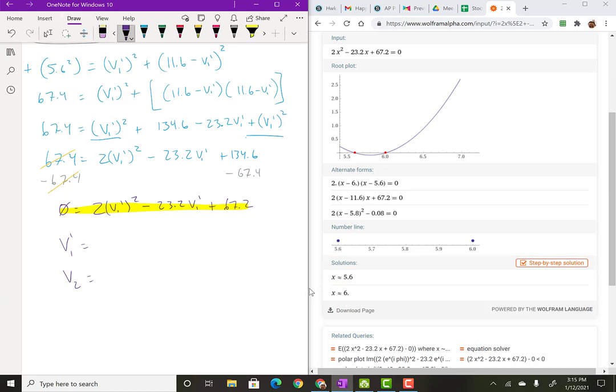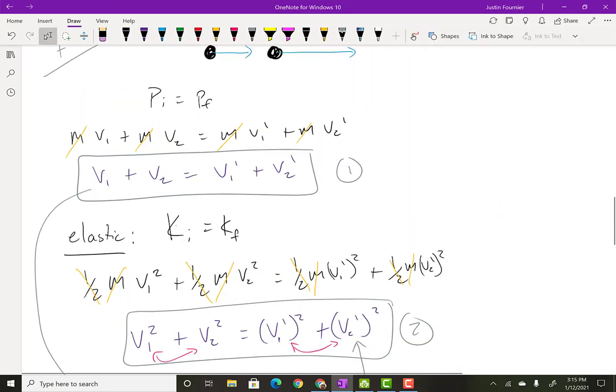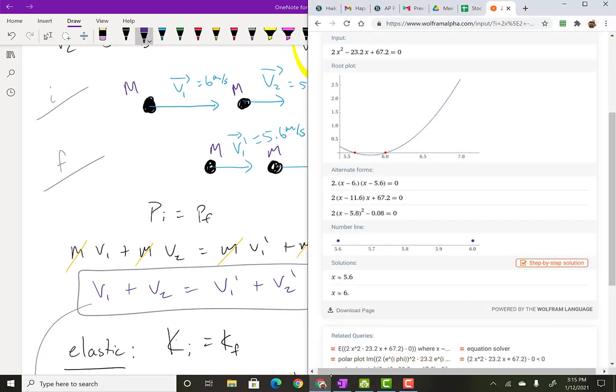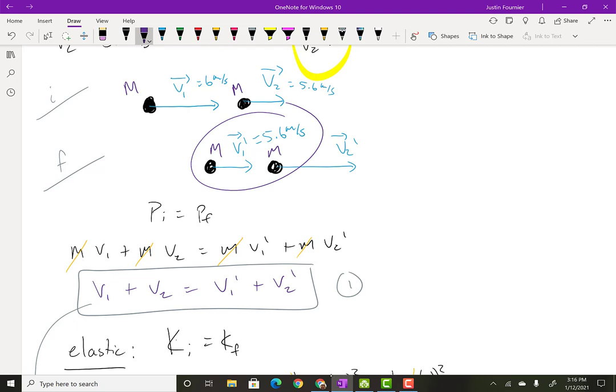And then this is going to be zero equals 2V1 prime squared minus 23.2 V1 prime plus 67.2. And then so now I can do quadratic equation or what I'm going to do is just plug this into Wolfram alpha. So I plugged in this equation, the equation that I got previously into Wolfram alpha, got my zeros and my zeros end up being interesting numbers. They're 5.6 or six. Both of those are the things. So I'm going to make the argument that V1 prime, this should be V2 prime should be 5.6 then meters per second, because it was previously six.